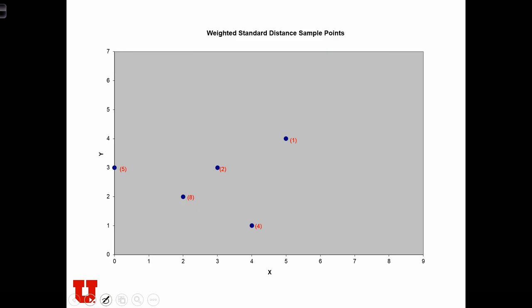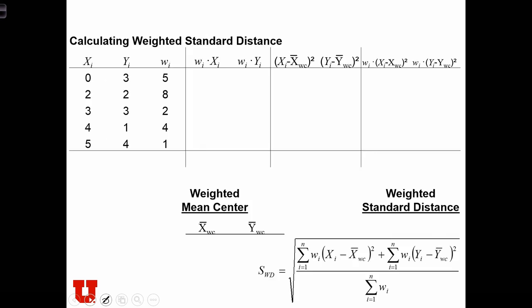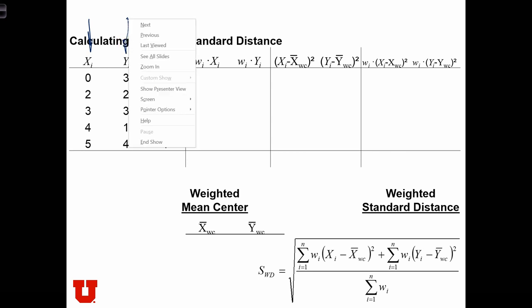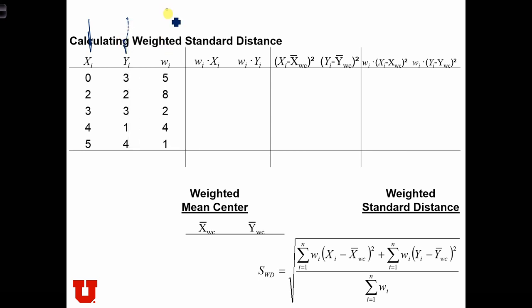Suppose we have this point distribution with the weights in red. We can make a table from the data, where for each observation we've recorded the x location, the y location, and the weight of that location.